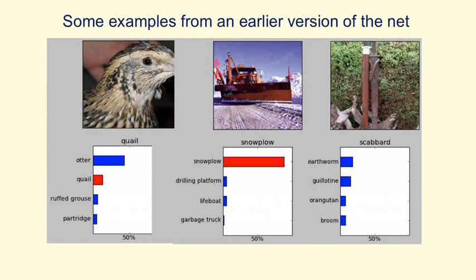Here are some examples of the kinds of images the network has to recognize — images from the test set it's never seen before. Below each example I'm showing what the neural net thought the right answer was, where the length of the horizontal bar indicates confidence and the correct answer is in red. In the middle, it correctly identified a snowplow, and its other choices were fairly sensible — it looks a little like a drilling platform, and its third choice, a lifeboat, actually looks very like a lifeboat, with a flag and bridge visible. Its errors tell you a lot about how it's working, and they're very plausible errors.